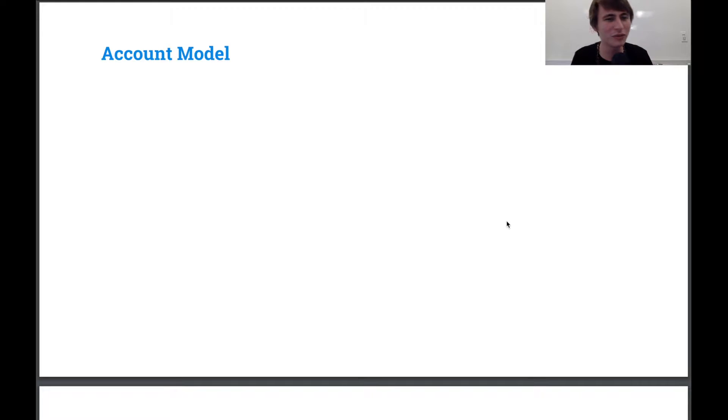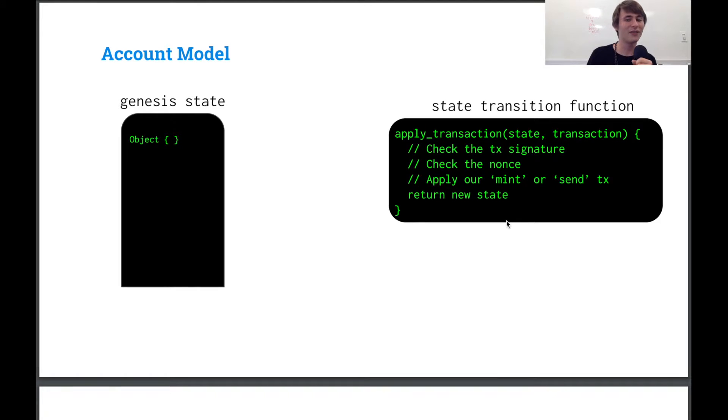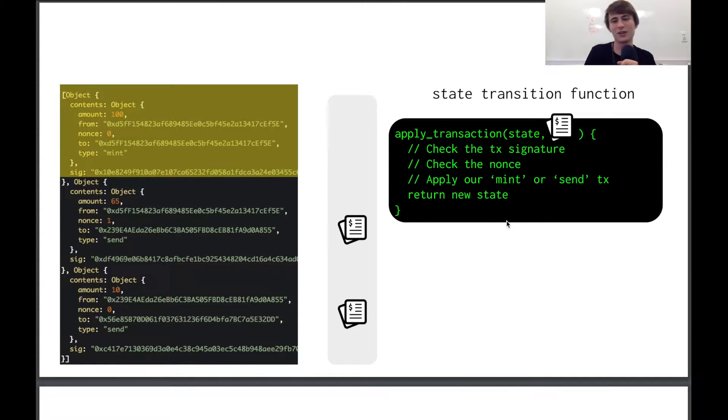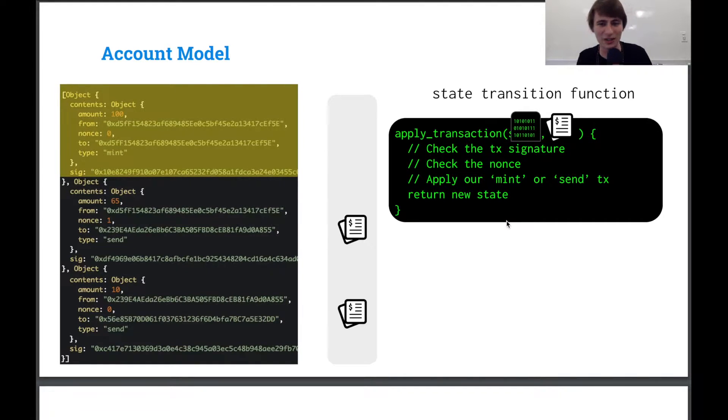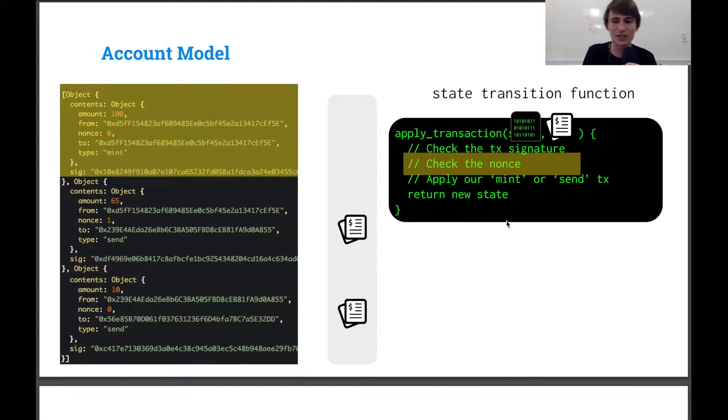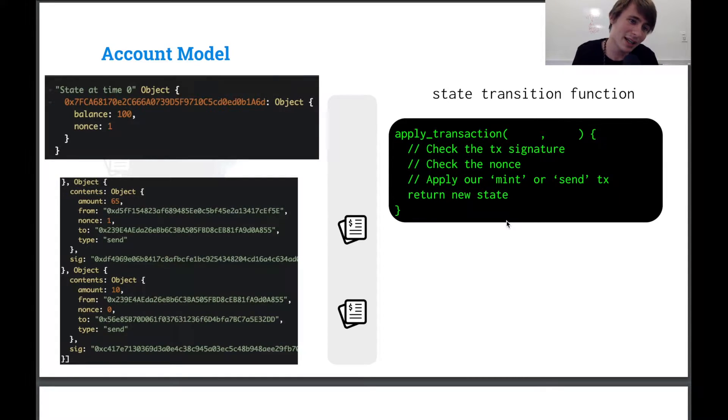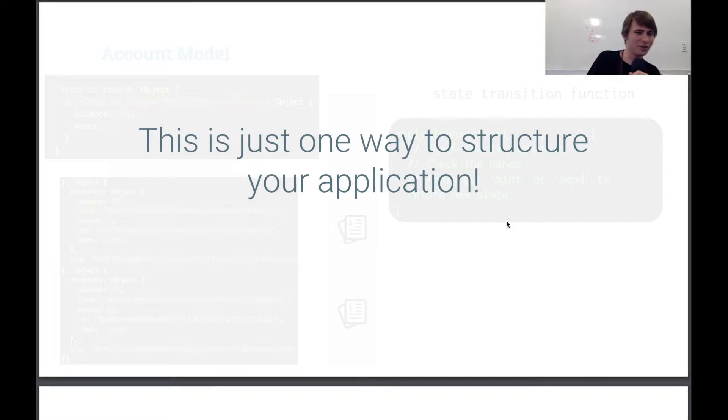So first, a little review of the account model. We have our genesis state and our state transition function, and we have our transactions. We take those transactions, apply them to our state transition function and give our genesis state, check the signature and nonce, apply our transaction, and we get a new state. And our state has an address, a balance, and a nonce, just like we went over.